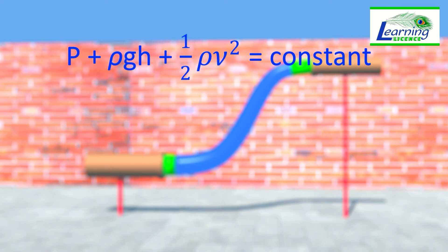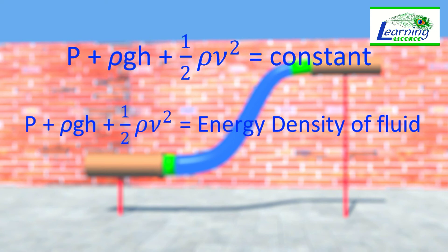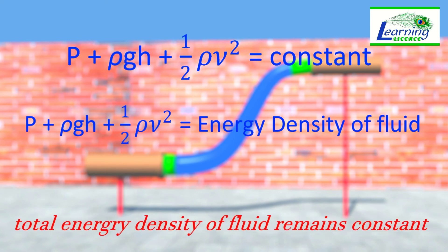This constant quantity has dimensions of energy per unit volume, or energy density. So we can say that total energy density of the fluid remains constant everywhere.